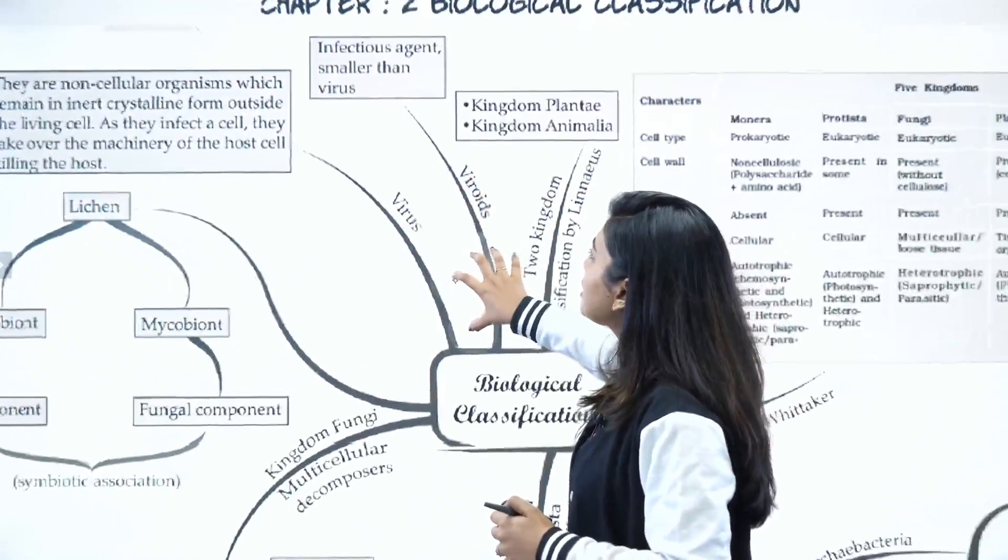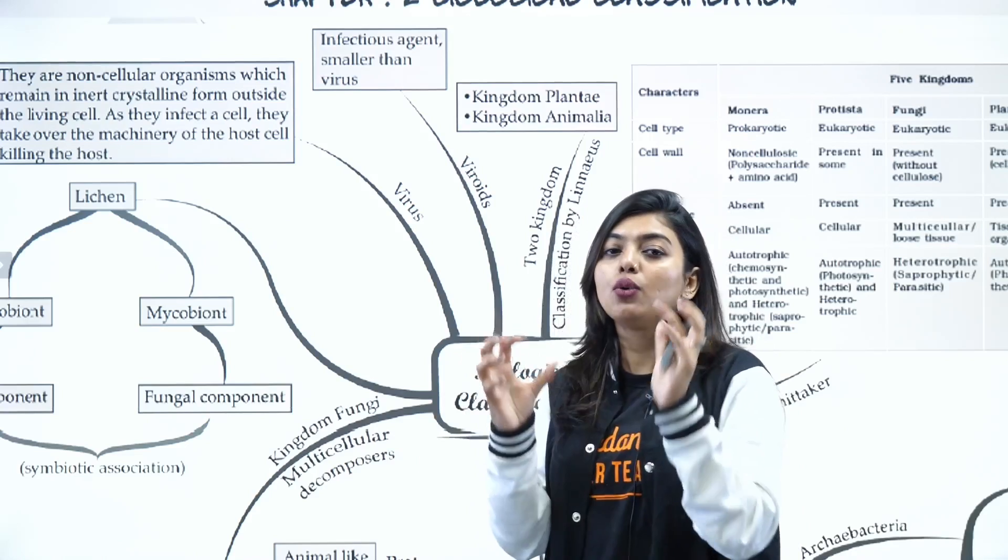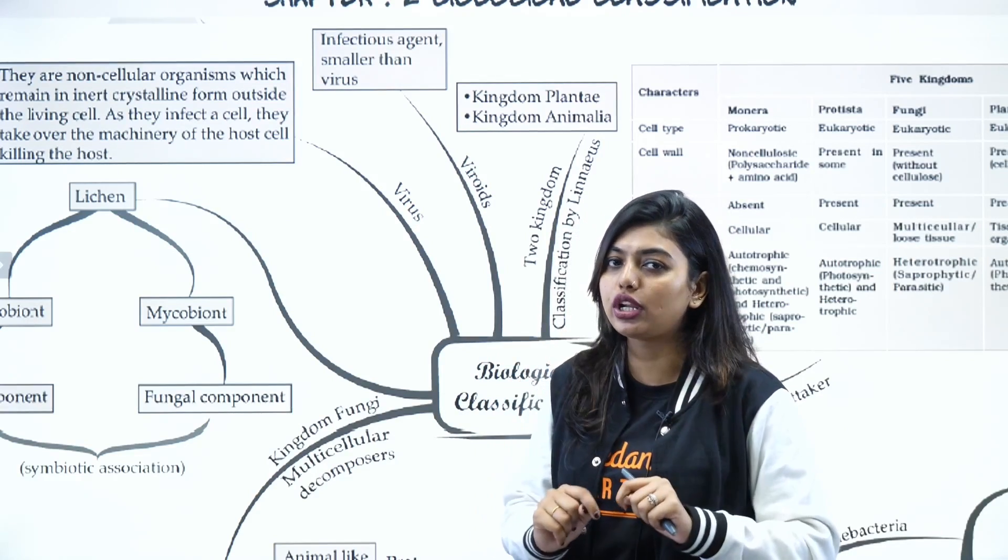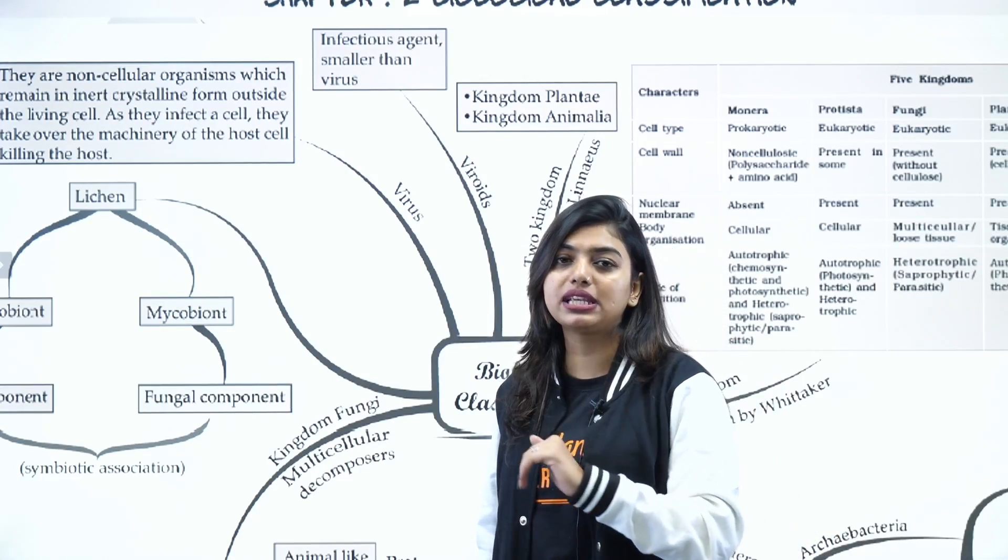After that, we have viroids - infectious agents which are smaller than virus. We also have prions, which are smaller units which have free RNA without the protein coat - very infectious, causes mad cow disease and Jakob disease in humans.